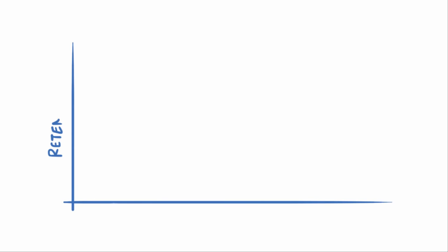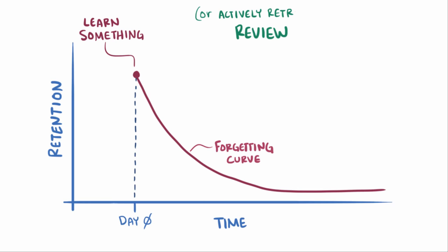Here's how it works. Say you plot your retention, or how much you remember of something, versus time. Now you learn that something on day zero. Without reviewing it, the forgetting curve will look like an exponentially decaying curve, which is kind of scary.